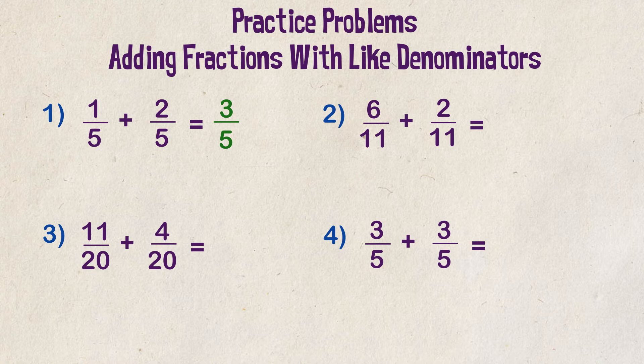Example two. Six elevenths plus two elevenths. We add six plus two and get a total of eight. We put it over our original denominator of 11 and we get eight over eleven.